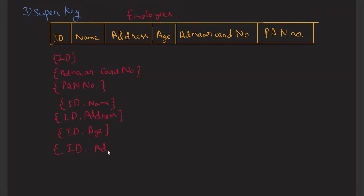ID, Aadhaar card number, and PAN number can also be super keys. So a set of all the attributes — a set of ID, a set of Aadhaar card number — combined with another attribute will also uniquely identify the record. We can also combine Aadhaar card number with age, address, name, PAN card number, and so on. There will be multiple sets of attributes that will uniquely identify the records of the table.